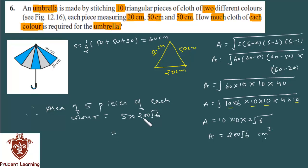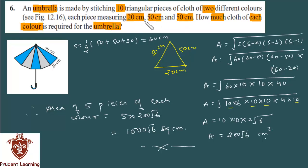5 into 200 is 1000, so the cloth required for each color is 1000√6 square centimeters. To summarize: 10 triangular pieces of cloth use 2 different colors, each triangular piece is identical, and using Heron's formula we found each triangle's area. Since 5 triangular pieces are in any one color, we multiplied one triangle's area by 5 to get 1000√6 cm² per color.